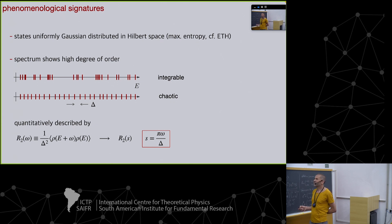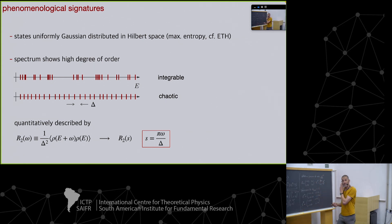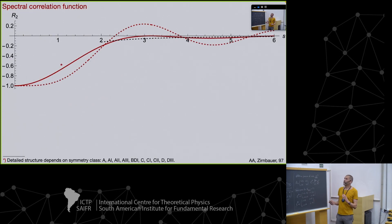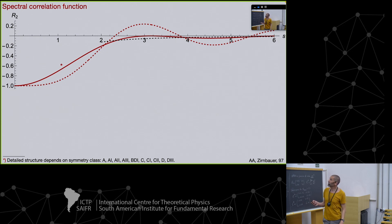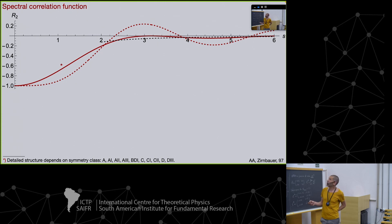We do that by looking at our two-point correlation function, measuring the correlations of density of states at slightly different energies. We measure energy in natural units of the problem — the average level spacing — and obtain a dimensionless function depending on a single dimensionless parameter characterizing the statistics of the spectra. How do these correlation functions look? They all look qualitatively oscillatory and decaying at large energy differences. The fine print depends on which symmetry class you're in, but they all have this structure in common.